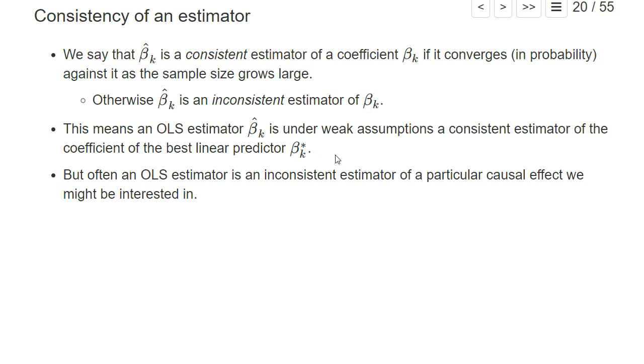This means under relatively weak assumptions, the OLS estimator β̂ₖ is a consistent estimator of the coefficient of the best linear predictor β*ₖ. However, often an OLS estimator is an inconsistent estimator of a particular causal effect that we are interested in.